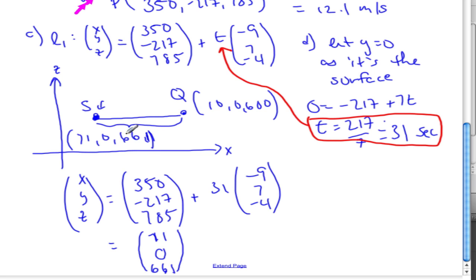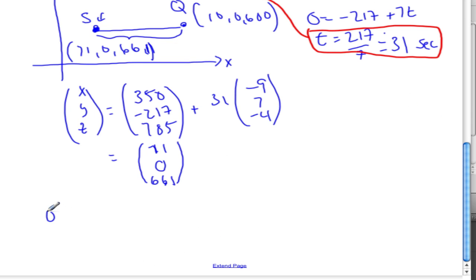I want to find the distance from S to Q. To find this distance, I find vector SQ by going head minus tail. So 10 - 71 is -61, then 0, and 600 - 661 is -61.